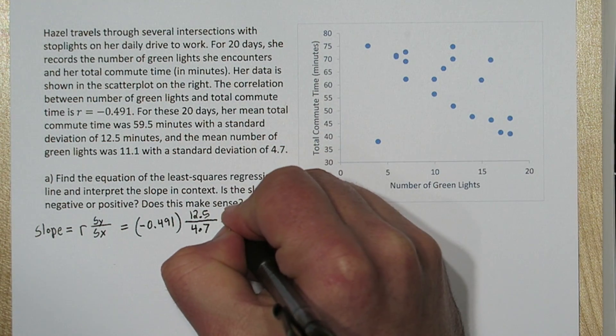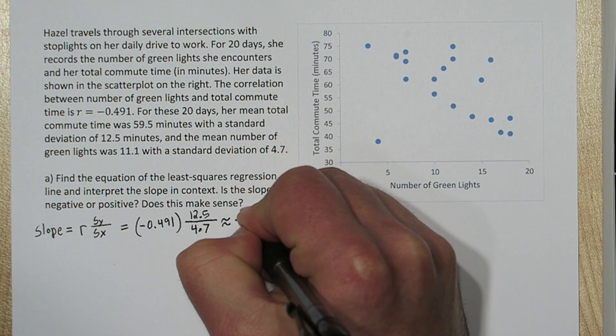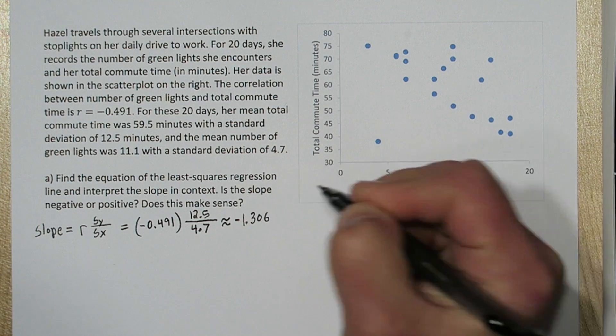So if you put that in a calculator, you end up getting about negative 1.306. That's our slope.